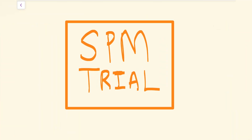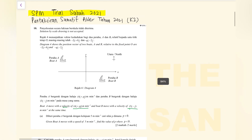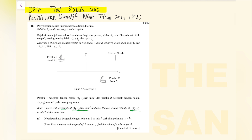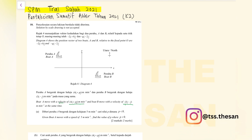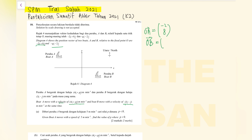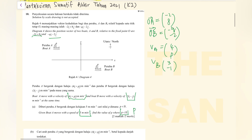We'll look into SPM trial questions, and in this video we'll go through 4 questions. The first question is quite special — it's from SPM trial Sabah 2021. In this question, we're required to find the direction and the time when 2 boards meet, and also the position vector when they meet. The position vector of board A is given, and board B is negative Q, negative 2. Board A moves with a velocity of 4 and P, and board B moves with a velocity of 3, negative 1, at the same time. Given board A moves with a speed of 5, find the value of P where P is less than 0.